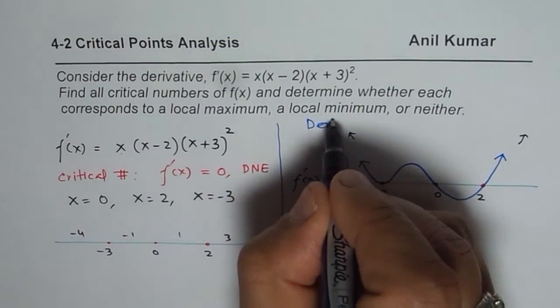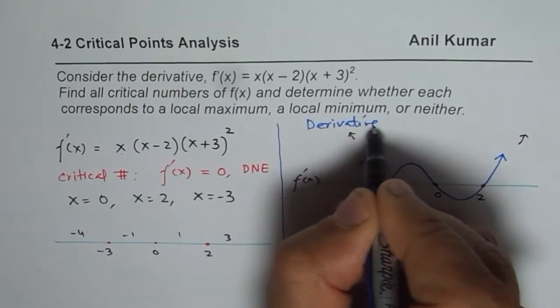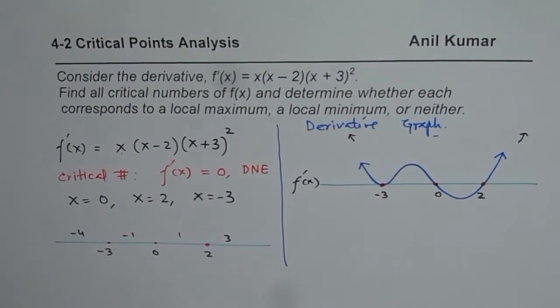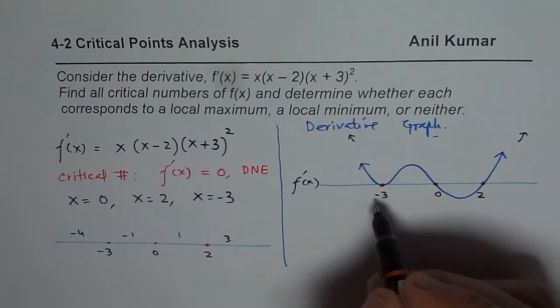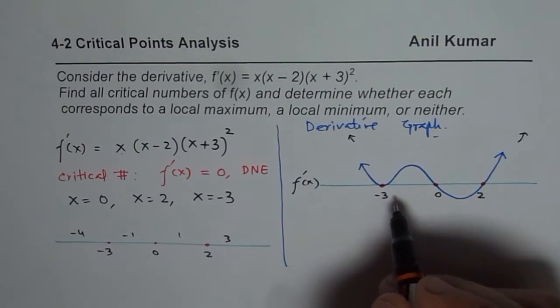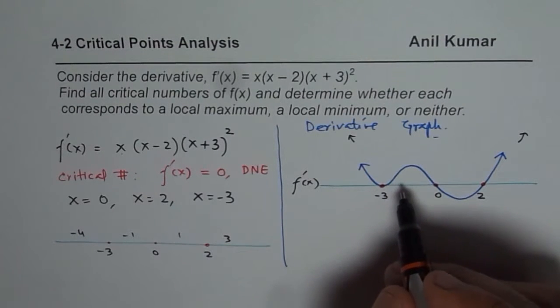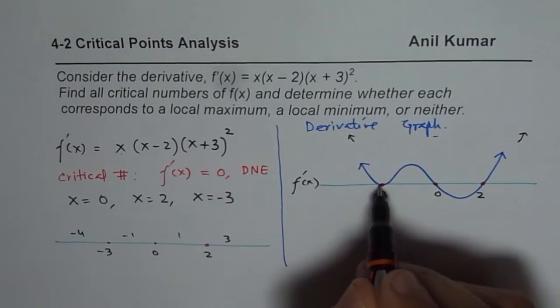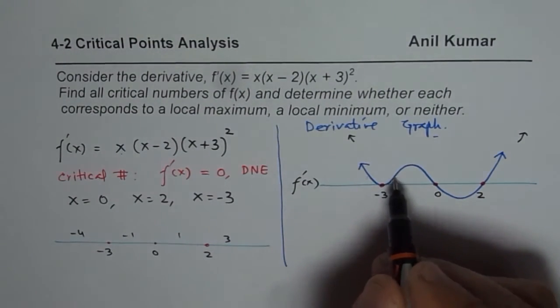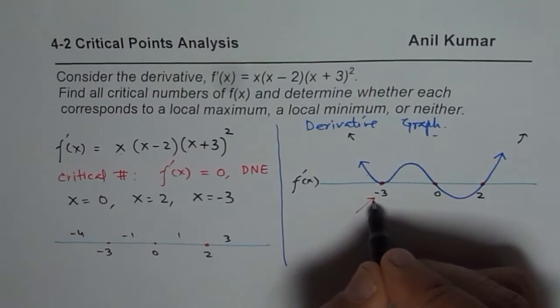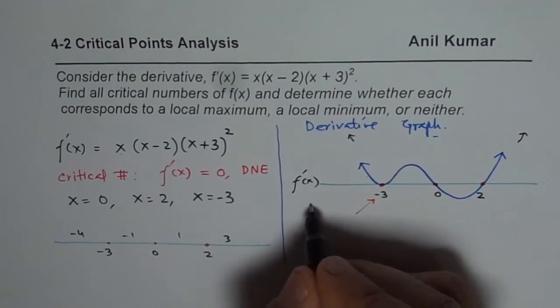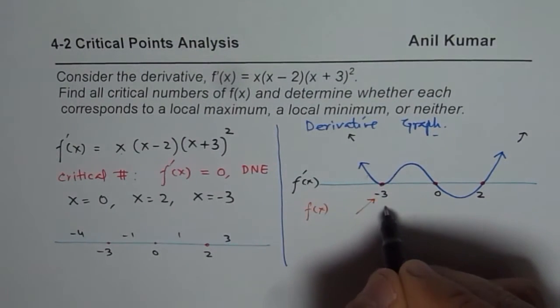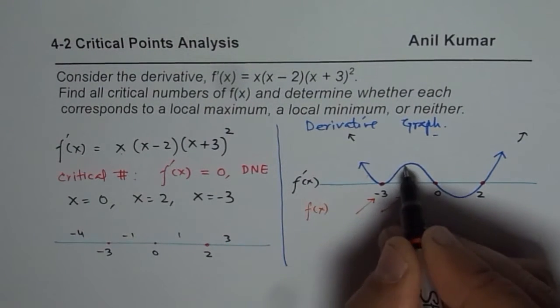So, we are analyzing derivative. From the graph itself, at each critical point, you can see what is happening to the derivative. Derivative is positive and positive. Do you see that? So, it is above the line. So, the derivative is positive. That means the function, f(x), will be increasing. Positive means increasing. Beyond this point, again, it is positive. It is further increasing.